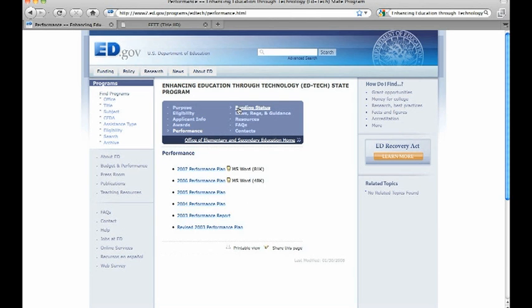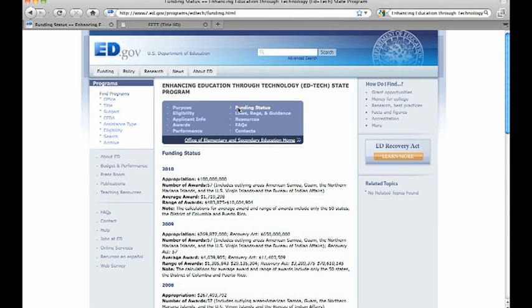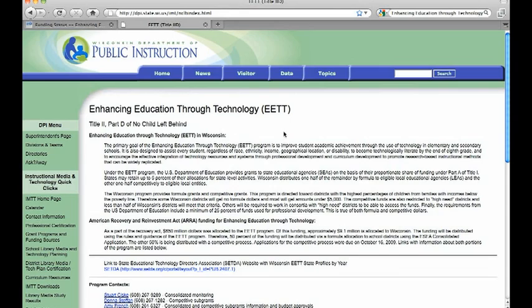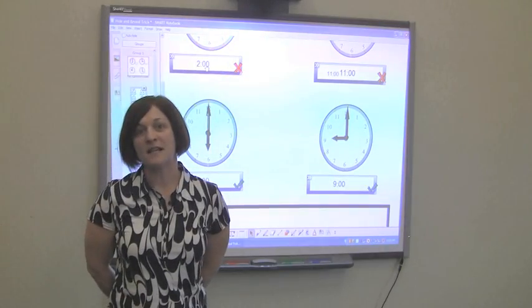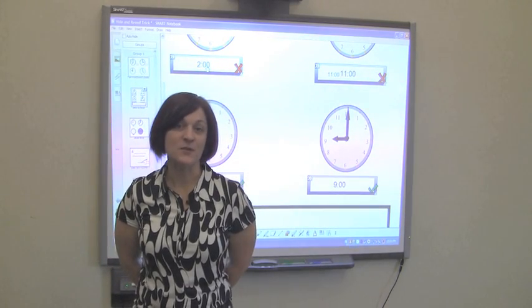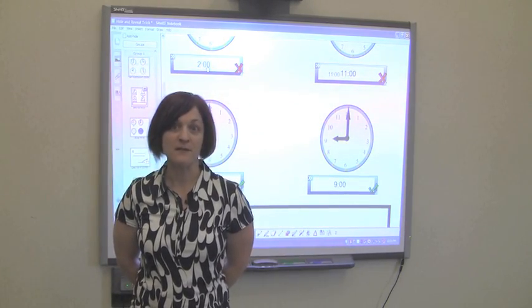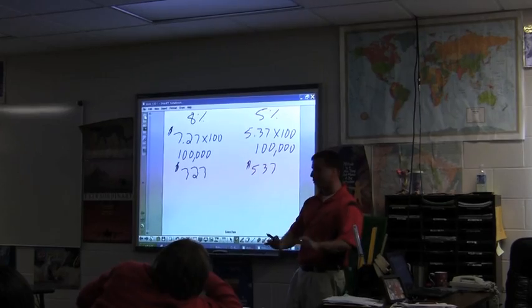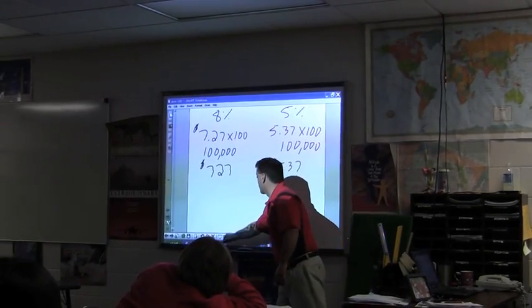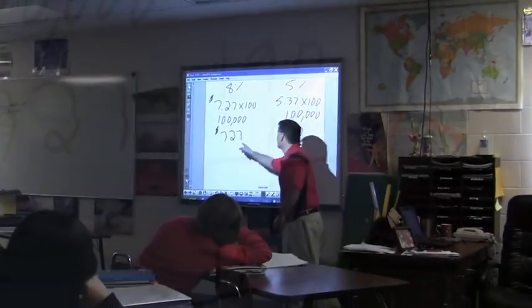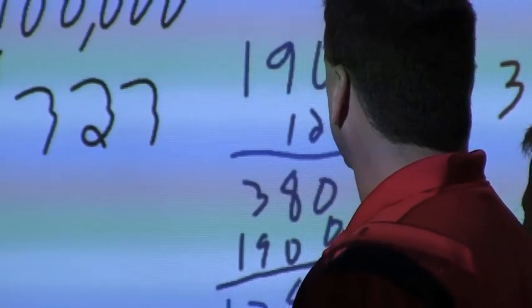Our district chose to purchase smart boards for all of our 4th through 5th grade classrooms to enhance instruction. Smart boards are electronic learning devices that allow both staff and students to interact with computer software, educational games, and the internet, all in real time. Throughout the district, we have 20 smart boards and hope to add more in the future.